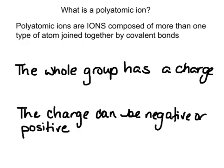Writing notes in your notebook, you need to write down that polyatomic ions are ions, which means they have an ionic charge. They are composed of more than one type of atom, and they are joined by covalent bonds. Let's look at a few more examples.